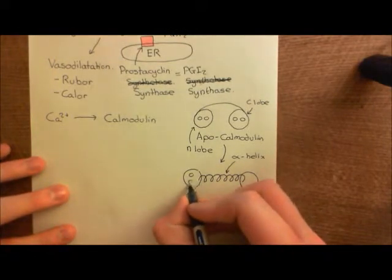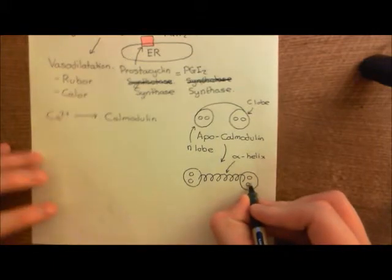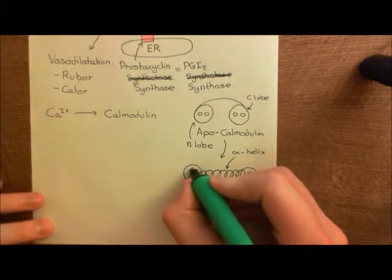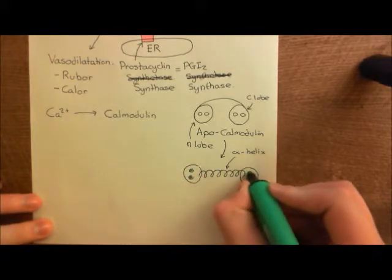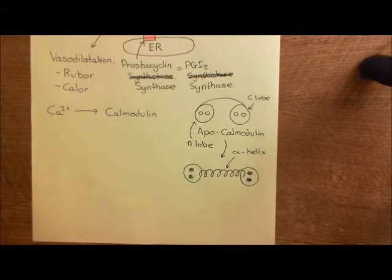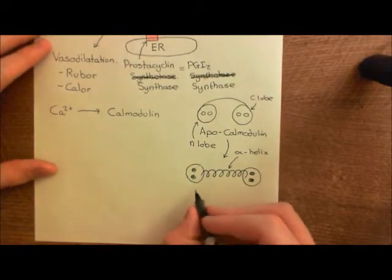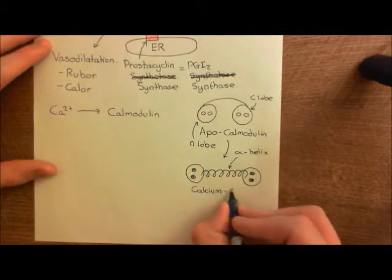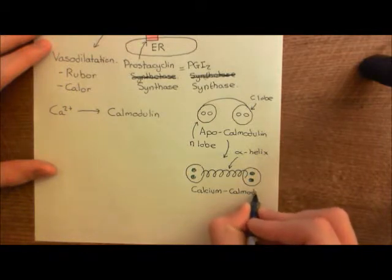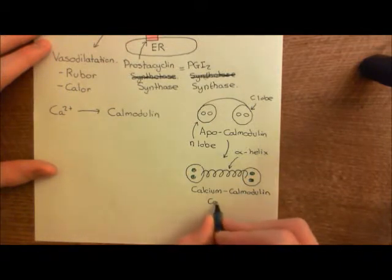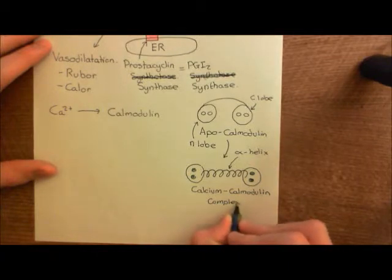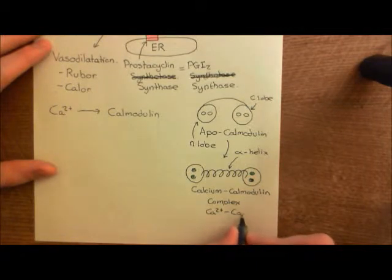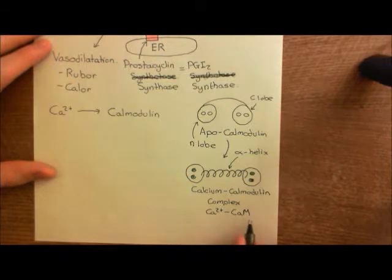The change that has occurred is that four calcium ions are now bound to these four calcium binding sites, one in each calcium binding site. And this structure where we have calcium bound to calmodulin, this is what's known as a calcium-calmodulin complex. There is a nice abbreviation for calcium-calmodulin complex. Often it's abbreviated to Ca2+, for calcium, and then capital C, lowercase a, capital M is the short term for calmodulin.